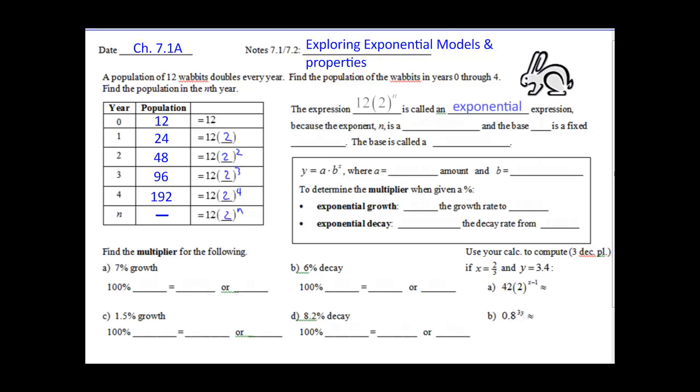So this expression that we get, this 12 times 2 to the n, is called an exponential expression, because the exponent n is a variable and the base 2 is some fixed number. In other words, that 2 could really be a 3, could really be a 4. So if it were a 3, we're tripling the wabbit each time. If it's 4, we're quadrupling. So the base 2 is called the multiplier. Now with repeated multiplication with exponential, we can use this equation: y equals a times b to the x, where a is your initial amount, b is going to be that multiplier that is raised to some exponential.